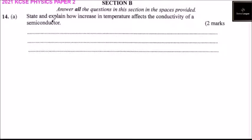This is Section B. You are told to answer all the questions in this section in the spaces provided. Question 14A: State and explain how an increase in temperature affects the conductivity of a semiconductor.